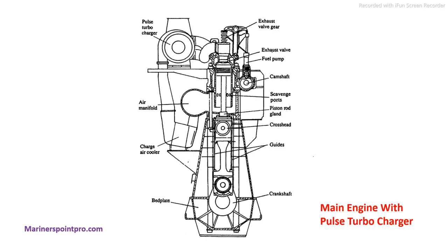The first figure is of a main engine which has a pulse turbocharger. You can see the different parts of the main engine: this is the bed plate, tank, shaft guides, charger cooler — this is the turbocharging system — this is the turbocharger, then air manifold, charger cooler, and scavenge ports. Go through these different diagrams and try to remember the different parts, because in Synergy exams it might give questions like pointing an arrow and asking what is this part's name.